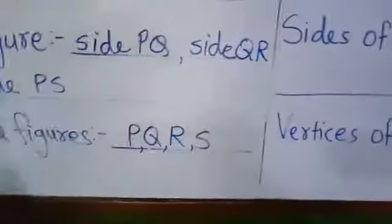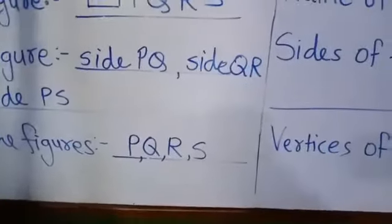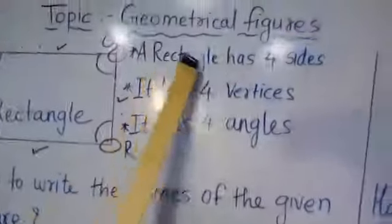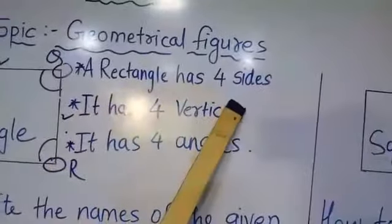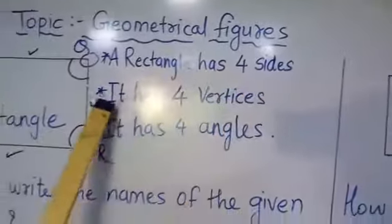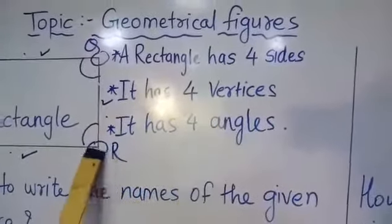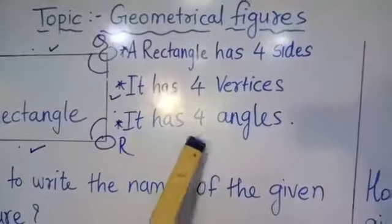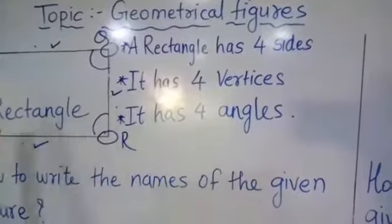To summarize the rectangle: a rectangle has four sides, four vertices, and four angles.